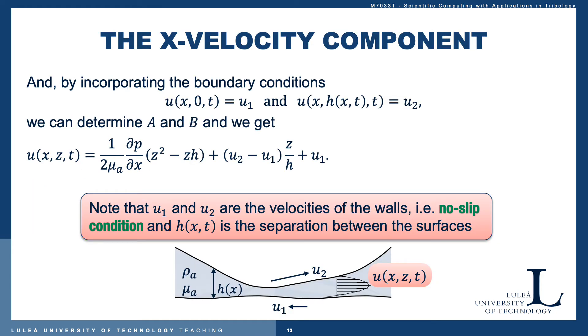By incorporating the boundary conditions—u1 for the lower boundary and u2 for the upper boundary at h, the separation between the surfaces, also known as the film thickness or clearance—these are also known as no-slip conditions, so the fluid sticks perfectly and is dragged along with the surface. By means of the boundary conditions we can determine the constants and get a closed-form expression for the velocity in the x direction.